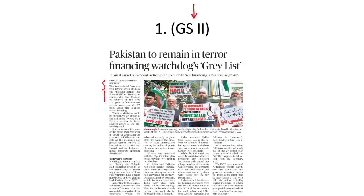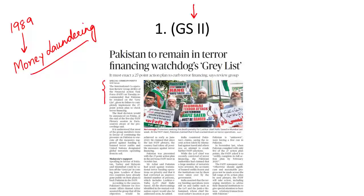Financial Action Task Force is an intergovernmental agency set up in 1989. Its principal objective was to curb money laundering — to ensure the global financial system, including banks and non-banking financial corporations, is not misused for money laundering. After the 9/11 attacks on the United States, the scope of FATF was expanded to also include Terror Financing.